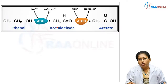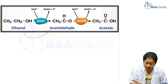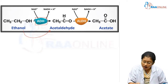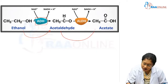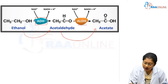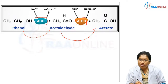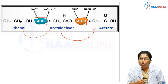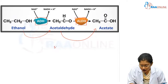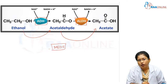Ethanol is oxidized to acetaldehyde by the enzyme alcohol dehydrogenase. This aldehyde is then oxidized to acetate by aldehyde dehydrogenase. One more system which helps in ethanol oxidation is MEOS, the microsomal ethanol oxidizing system, by cytochrome P450.